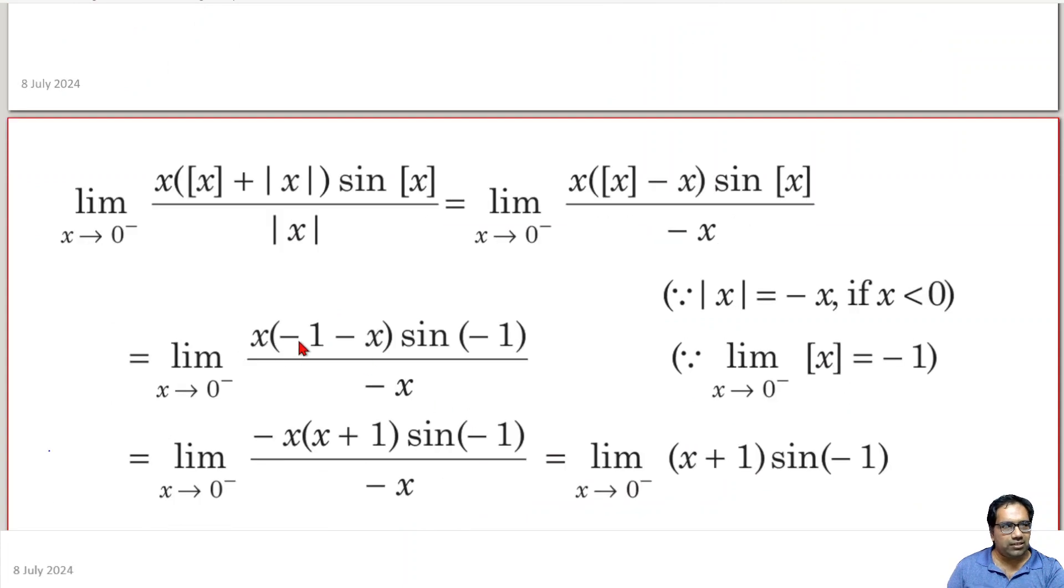We have, if we take this minus common, we have minus x into 1 plus x by again minus x. This minus x, this minus x we can cancel. We have x plus 1 into sin of minus x.